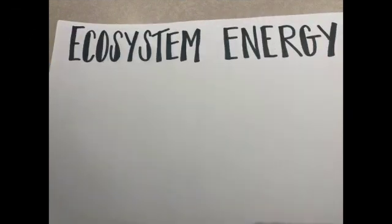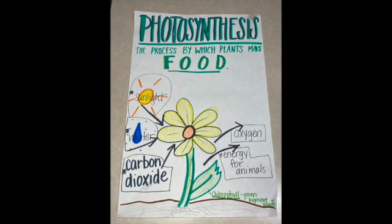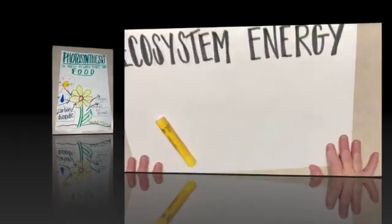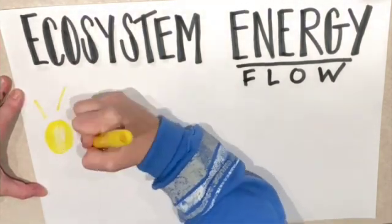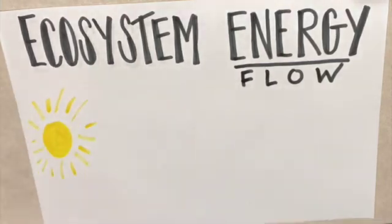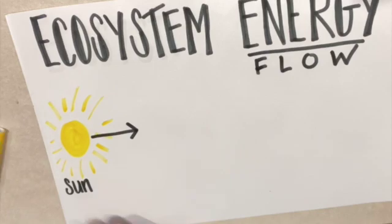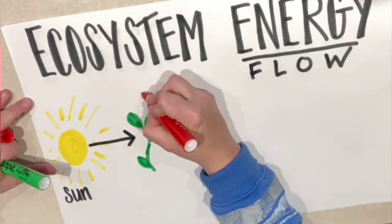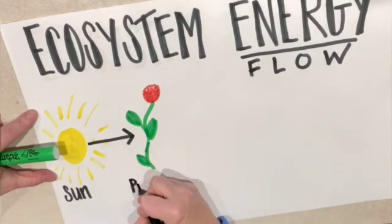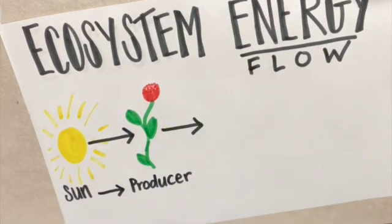As we look at our ecosystem energy flow, we need to remember that it starts with the sun. The sun gives energy to plants so they can make food through photosynthesis. Producers make their own food by using sunlight, water, and carbon dioxide. In the process, they release oxygen and energy for animals. So we get that sun's energy — that's the start of our ecosystem energy. Then we have that arrow showing the transfer of energy from the sun to a producer, like a flower.